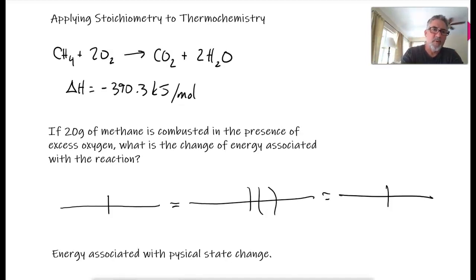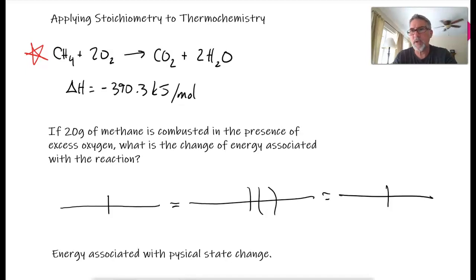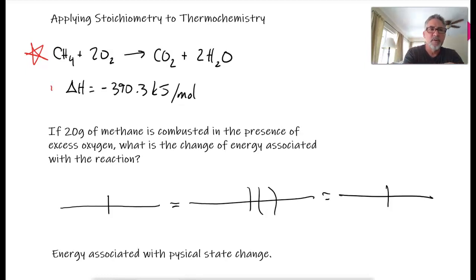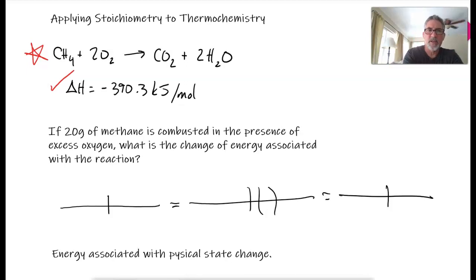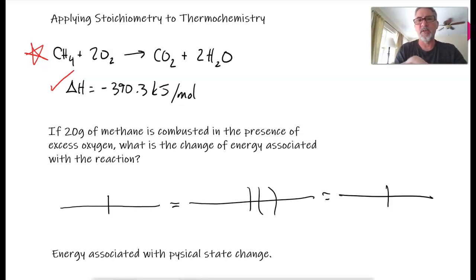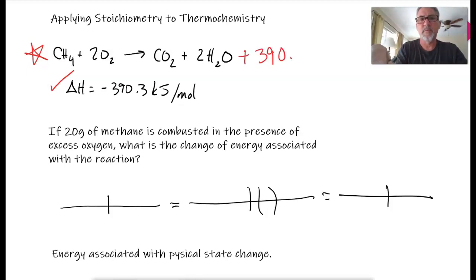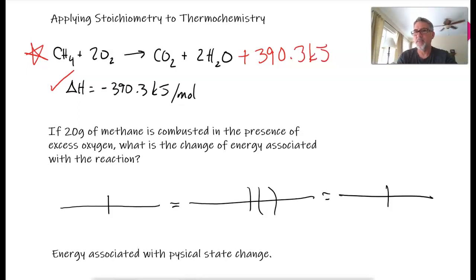So if I give you a reaction like this one right here, methane is burned in the presence of oxygen to produce CO₂ and H₂O. My enthalpy here says that 390.3 kilojoules per mole is released, and I know it's released because I have a negative sign there. Since it's exothermic, I would add it as 390.3 kilojoules in the products.